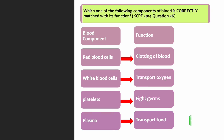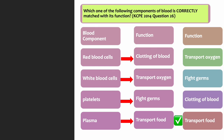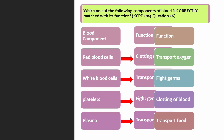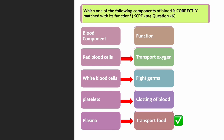Plasma is correctly matched to its function of transporting food. The function of the red blood cells is to transport oxygen. The function of the white blood cells is to fight germs. And the function of platelets is to clot blood.